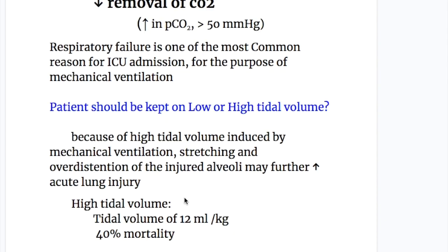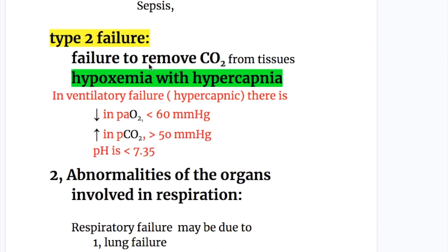Type 2 failure is failure to remove carbon dioxide from the tissue, with hypoxemia along with hypercapnia. In this condition, PaO2 is less than 60 mmHg, PCO2 is more than 50 mmHg, and pH is less than 7.35.